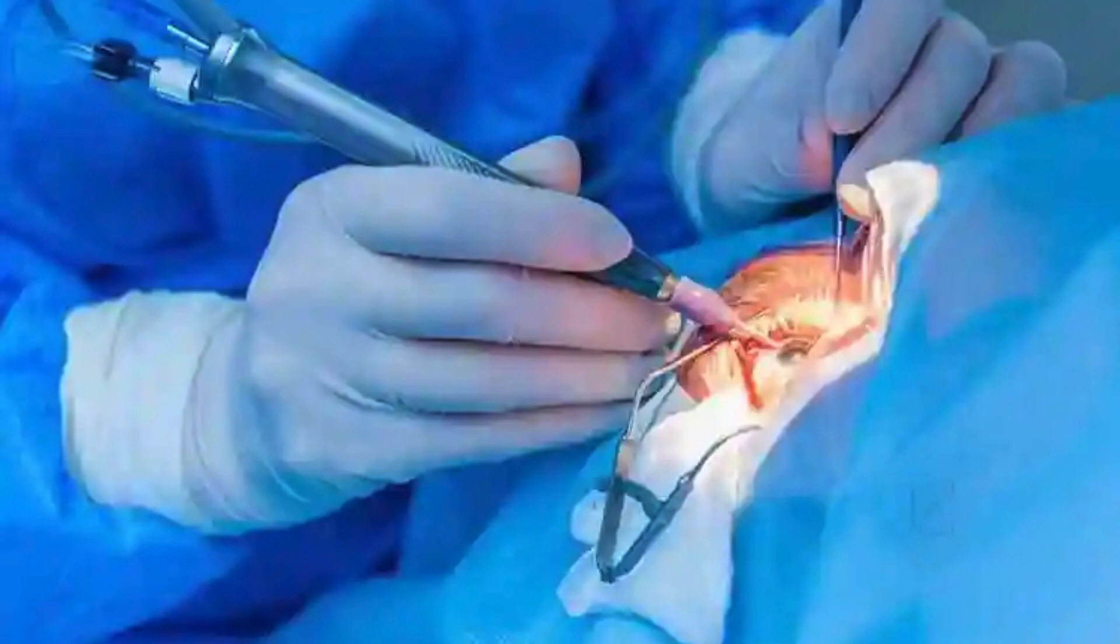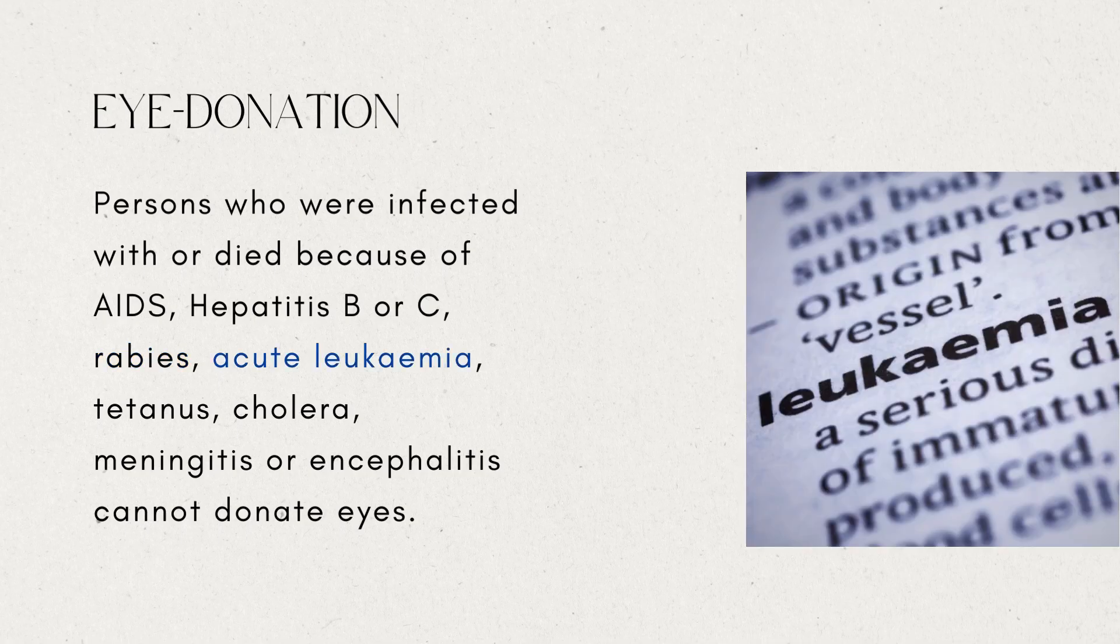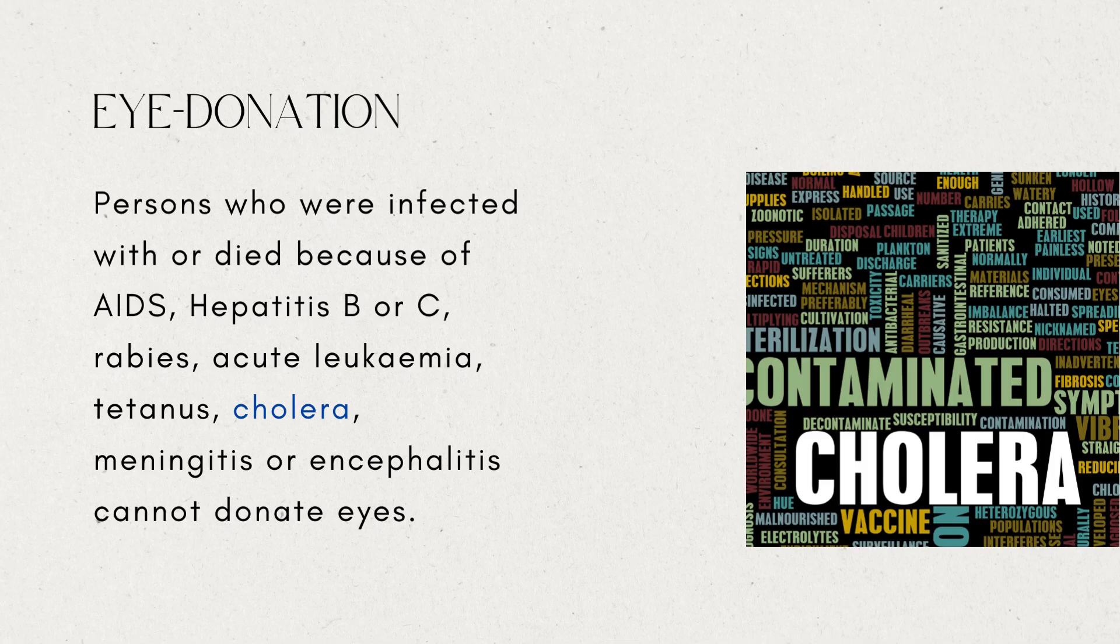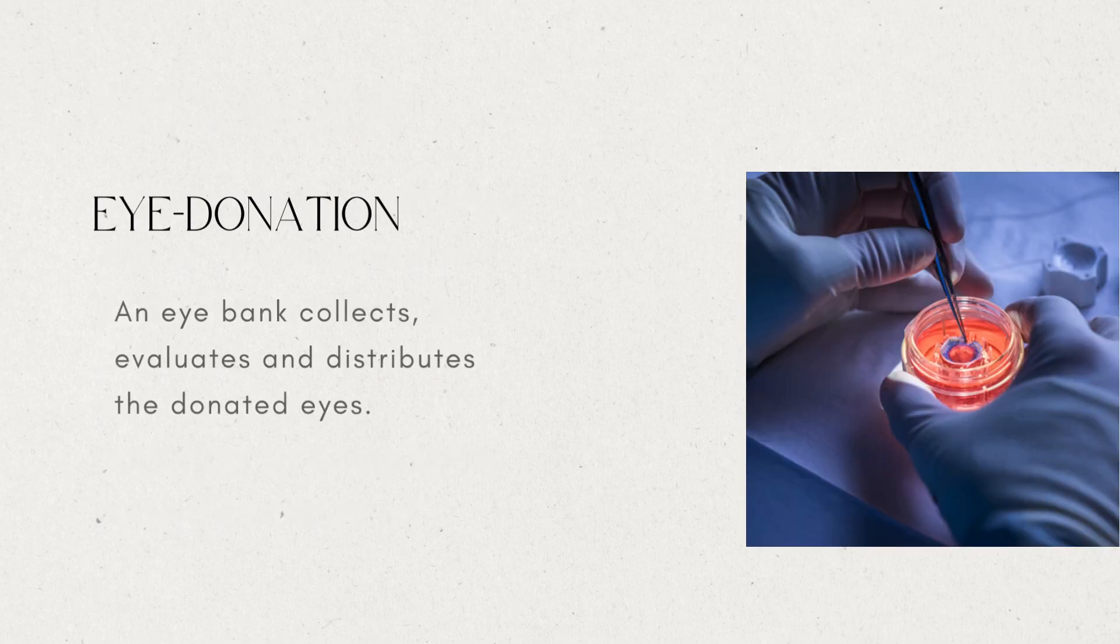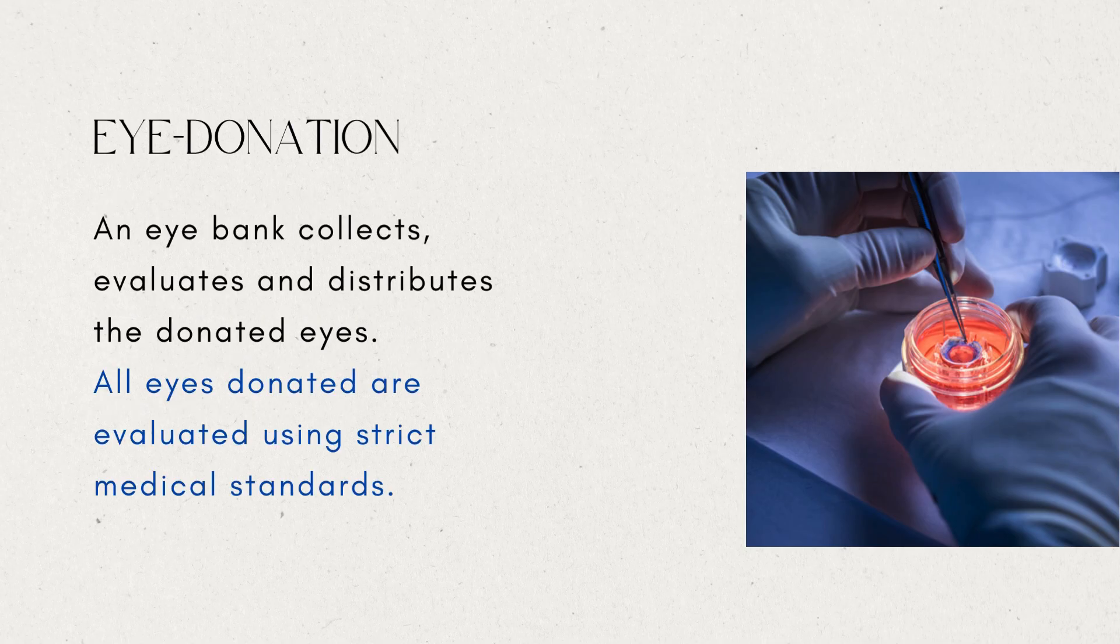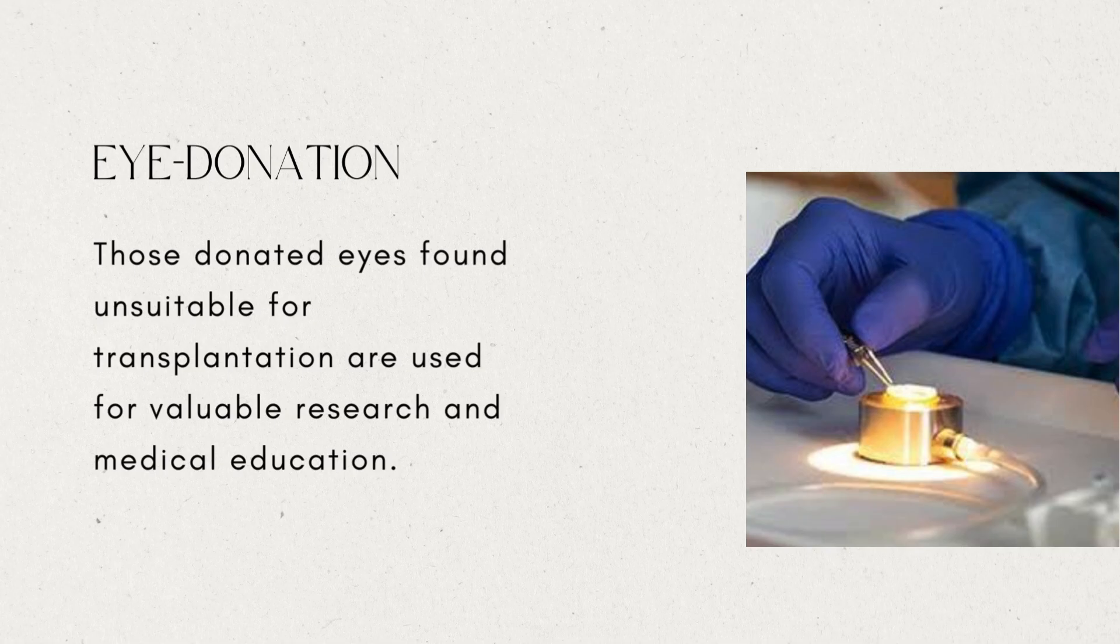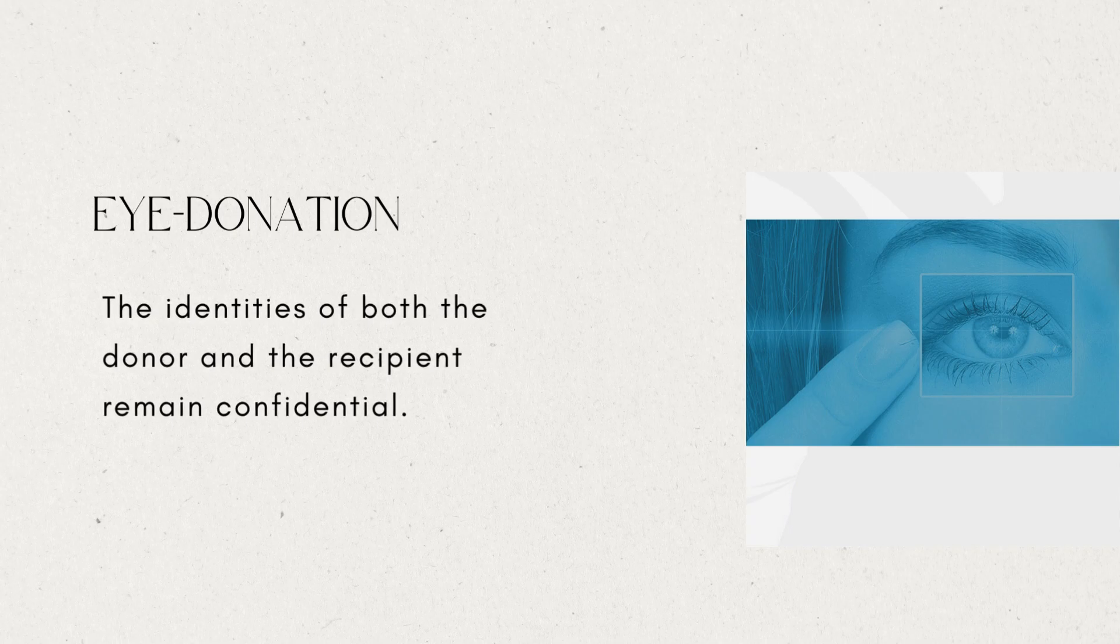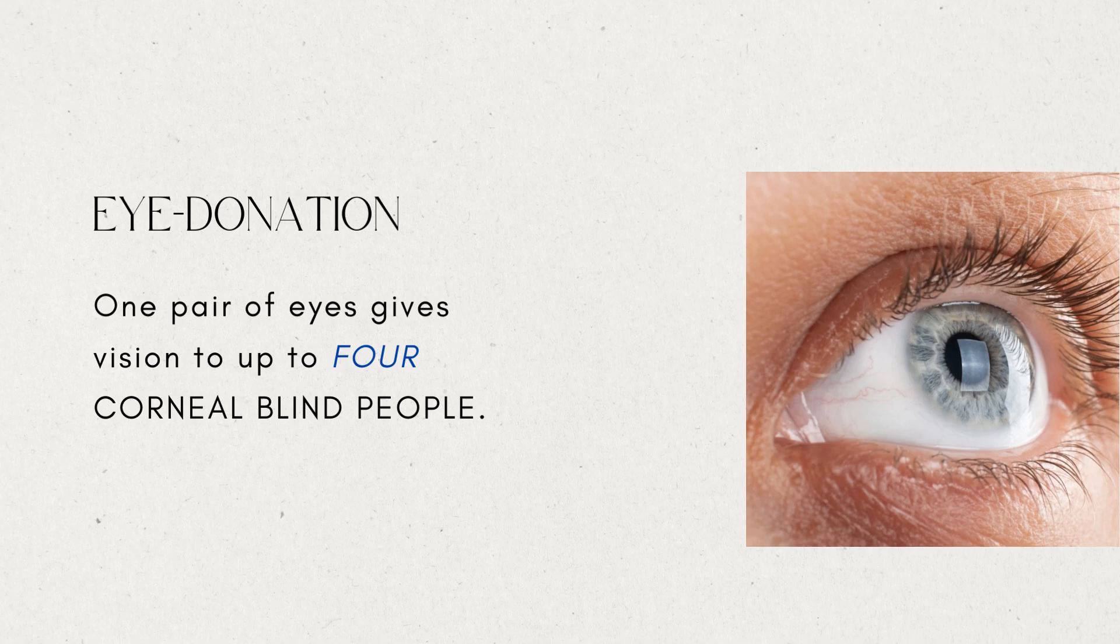Persons who were infected with or died because of AIDS, hepatitis B or C, rabies, acute leukemia, tetanus, cholera, meningitis, or encephalitis cannot donate eyes. An eye bank collects, evaluates, and distributes the donated eyes. All eyes donated are evaluated using strict medical standards. Those donated eyes found unsuitable for transplantation are used for valuable research and medical education. The identities of both the donor and the recipient remain confidential. One pair of eyes gives vision to up to 4 corneal blind people.